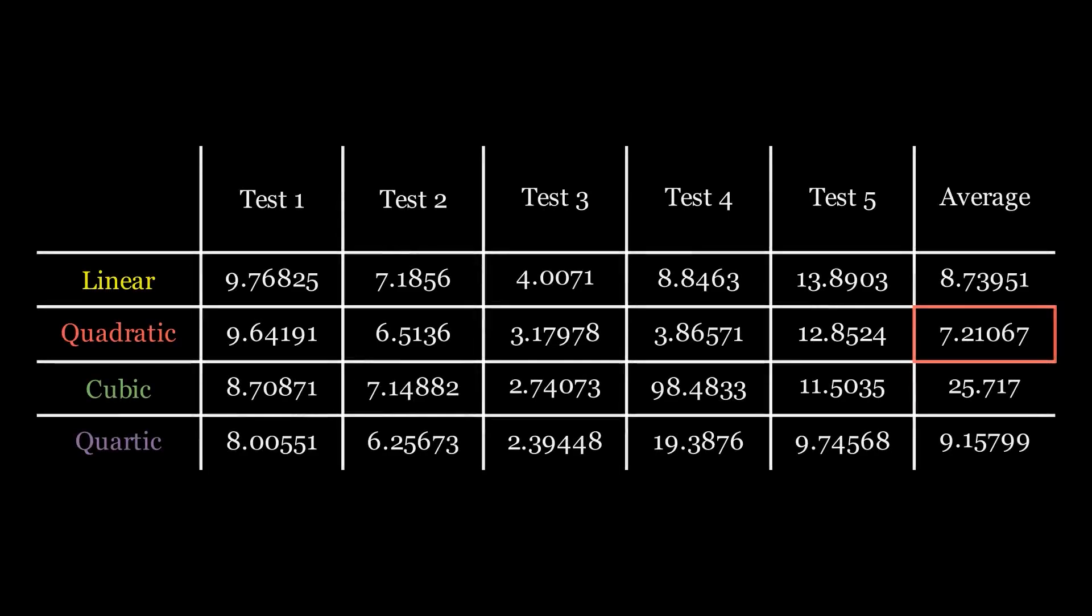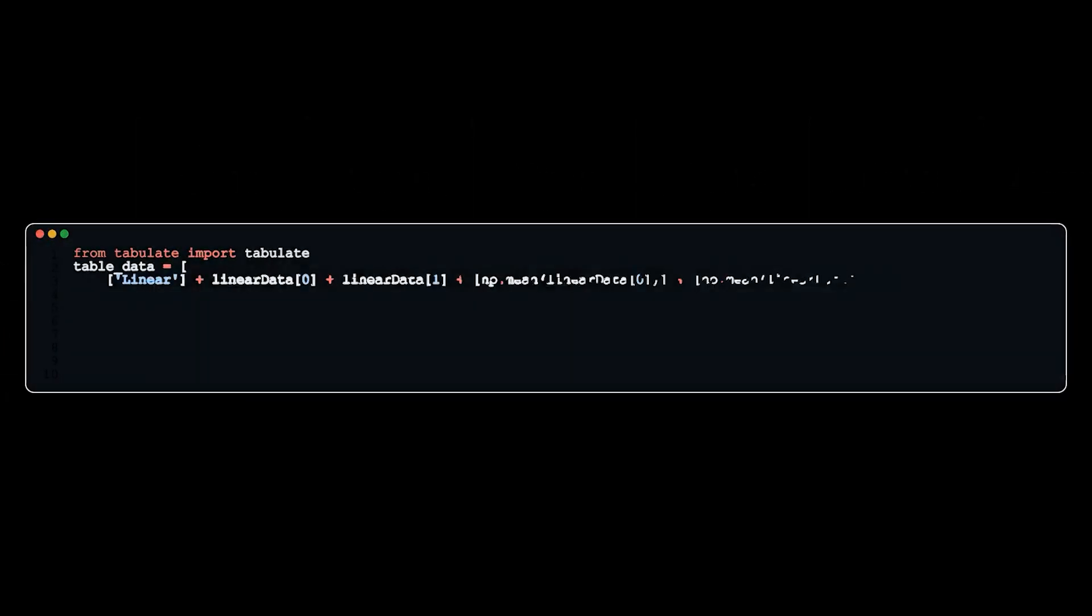As you can see, the function with the lowest average error on the test is the quadratic function, which indicates that the quadratic function is probably the best model for this specific data. Here's a snippet of code I used to make this table.